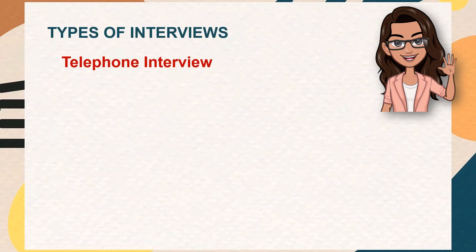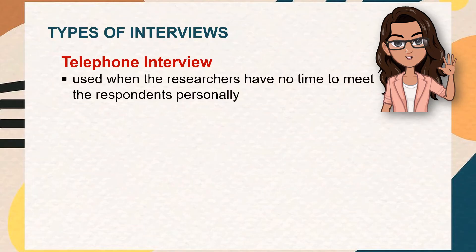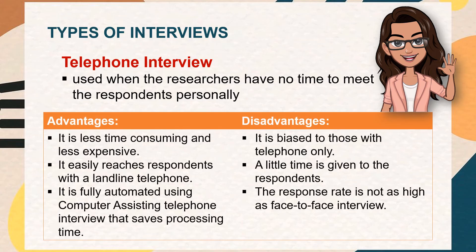The second type of interview is the telephone interview. It is used when researchers have no time to meet respondents personally; however, the response rate is not as high as face-to-face. Its advantages are that it is less time-consuming and less expensive, easily reaches respondents with a landline, and is fully automated using computer-assisted telephone interviewing, saving processing time. Its disadvantages are that it is biased to those with telephones only, respondents are given little time, and the response rate is not as high as face-to-face.